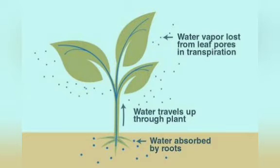Now coming to transpiration. If you cover a plant with a plastic cover, you will see some water droplets. The removal of excess water from the plant is known as transpiration. Water is absorbed by the roots, moves through the leaves, and then the water from the leaves gets evaporated — that is transpiration.